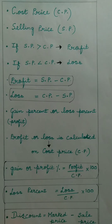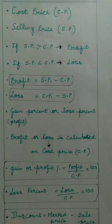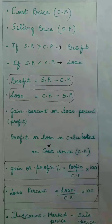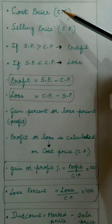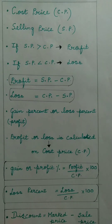In your 7th Standard Comparing Quantities lesson, you have studied regarding cost price, selling price, profit and loss and solved certain problems. So in this class, we shall recall all those concepts from your earlier classes. The buying price of any item is known as its cost price, written in short form as CP. The price at which the shopkeeper sells the item is known as the selling price, written in short form as SP.